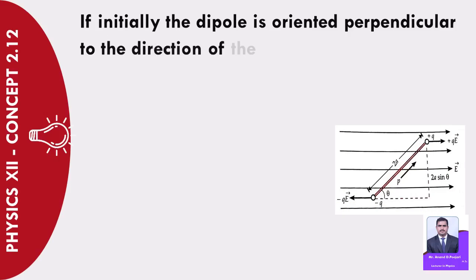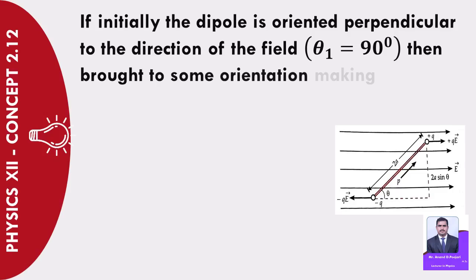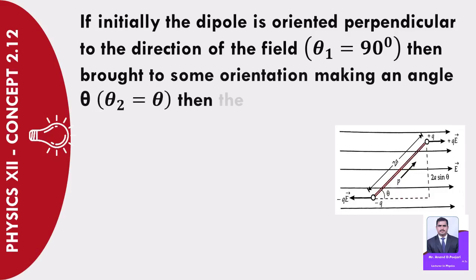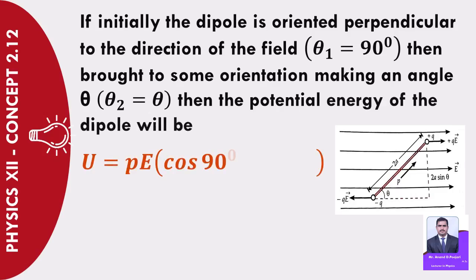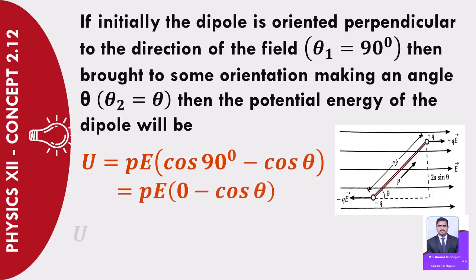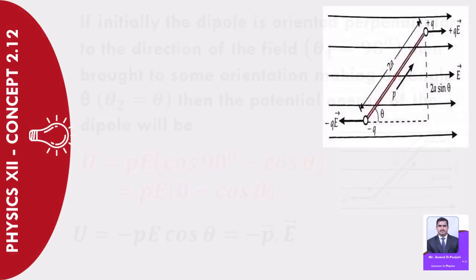If initially the dipole is oriented perpendicular to the direction of the field (θ₁ = 90°), then brought to some orientation making angle θ (θ₂ = θ), the potential energy of the dipole will be: U = PE(cos 90° − cos θ) = PE(0 − cos θ) = −PE·cos θ = −vector P · vector E.